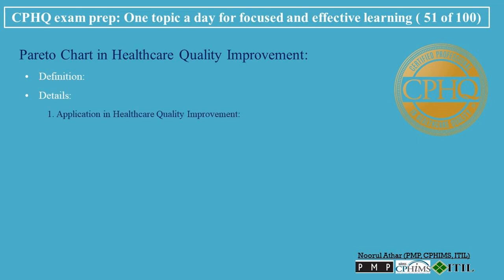Application in Healthcare Quality Improvement: Problem Analysis helps in identifying and prioritizing problems or causes of inefficiencies in healthcare settings. Resource Allocation assists in focusing efforts on the most impactful factors, facilitating more efficient use of resources. Performance Improvement targets the critical few issues that, if addressed, can significantly improve overall performance.